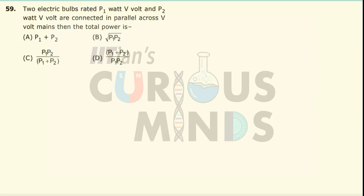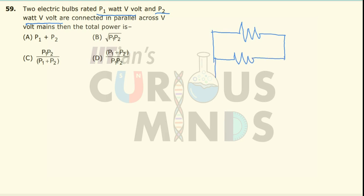Two electrical bulbs rated p1 watt V volt and p2 watt V volt are connected in parallel. This is the first bulb — I'll draw it as a resistance — and this is the second bulb, connected across a V volt battery. We need to find the total power through the mains.